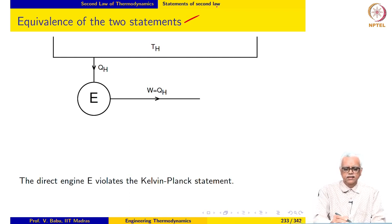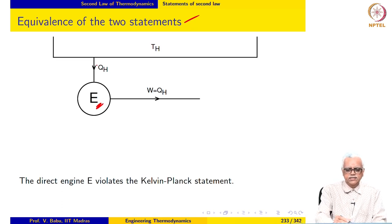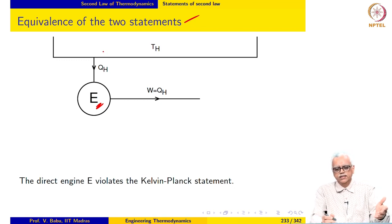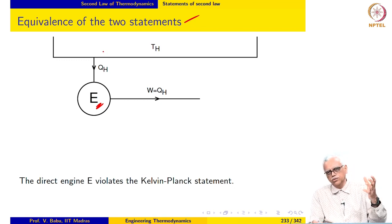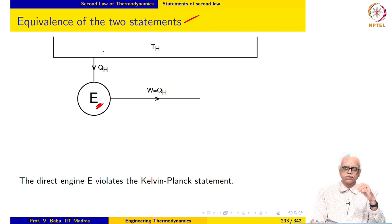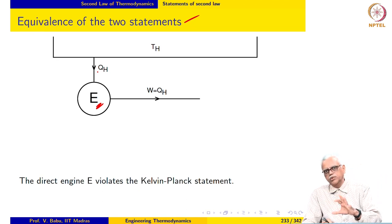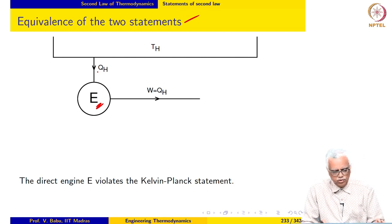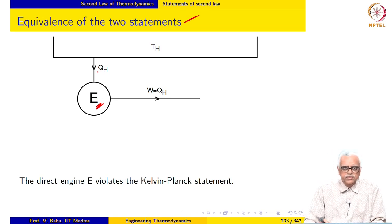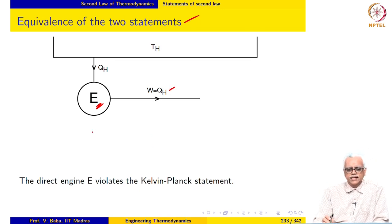We start with a direct engine that violates the Kelvin-Planck statement. Here is a direct engine: it takes an amount of heat QH from the hot reservoir, which we consider to be an infinite reservoir so its temperature does not change. During every cycle, it receives QH and produces an amount of work equal to QH without rejecting any heat — in clear violation of the Kelvin-Planck statement.